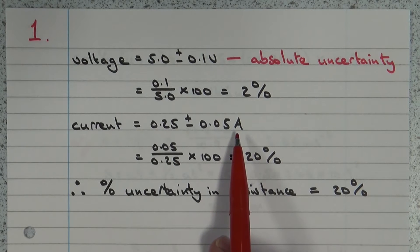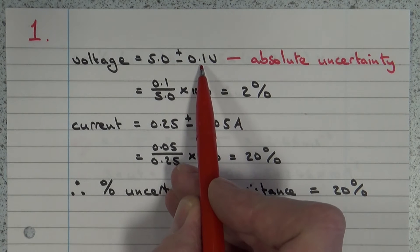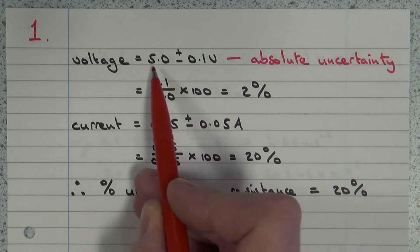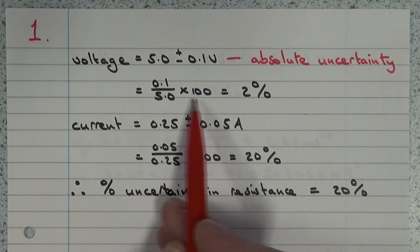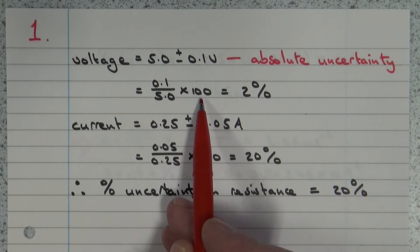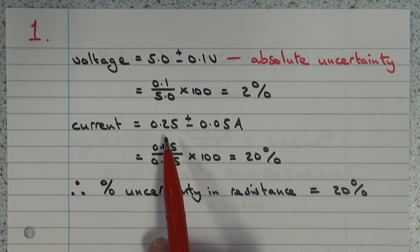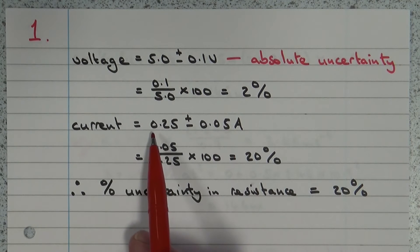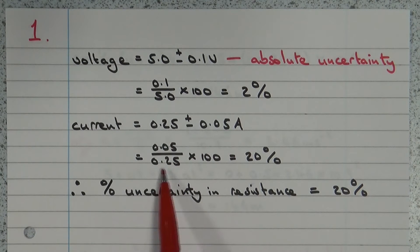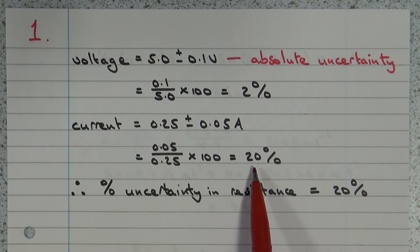To work out the percentage uncertainty, we take the absolute uncertainty and divide it by the reading. So 0.1 divided by 5 multiplied by 100 gives us 2% for the voltage. For current, the absolute uncertainty of 0.05 divided by our reading 0.25, multiplied by 100, gives us 20%.